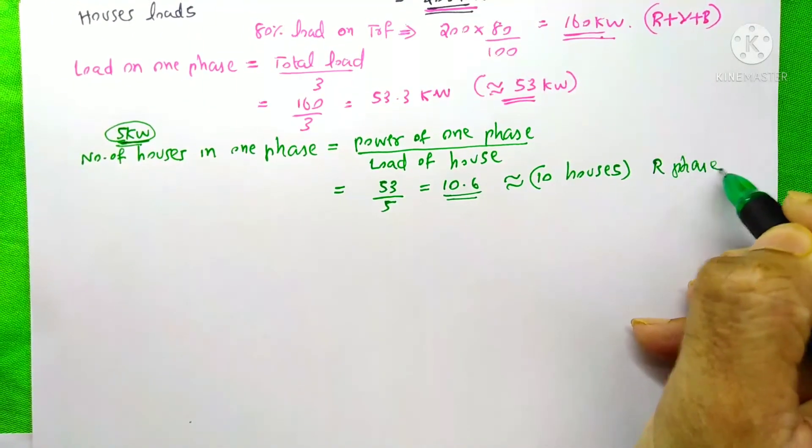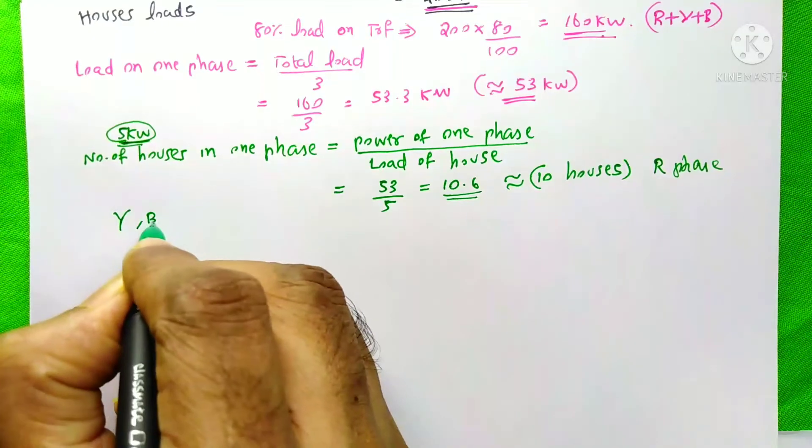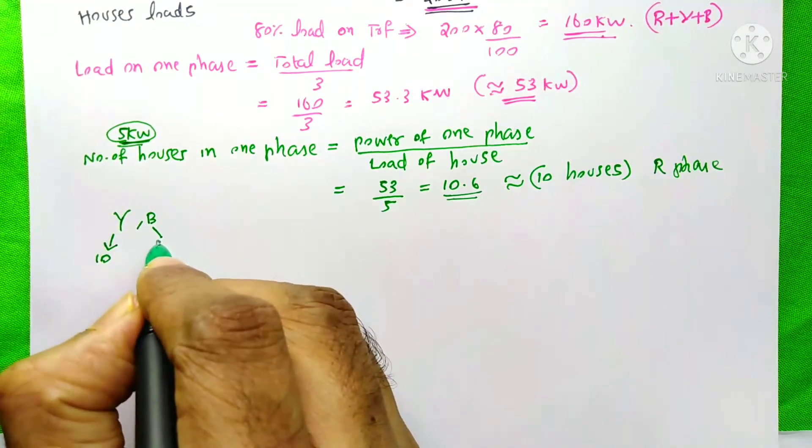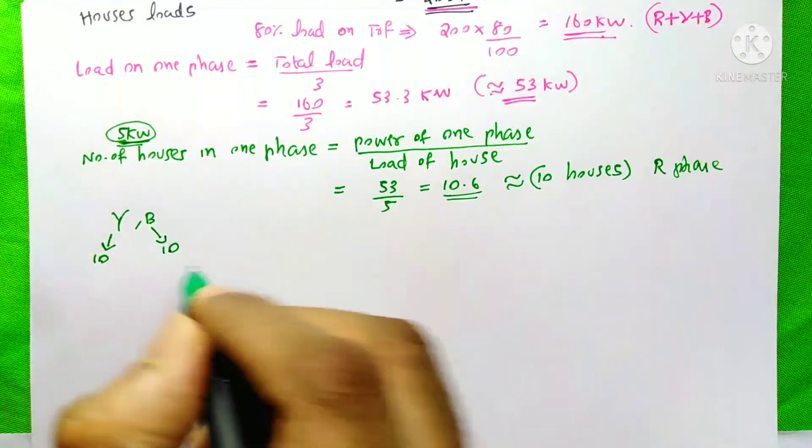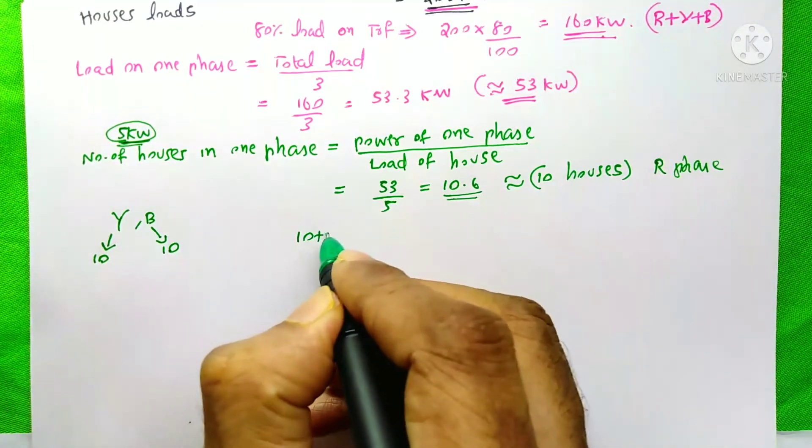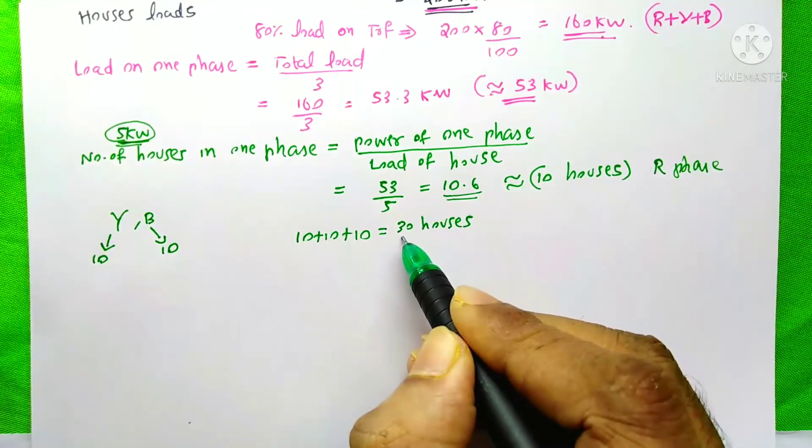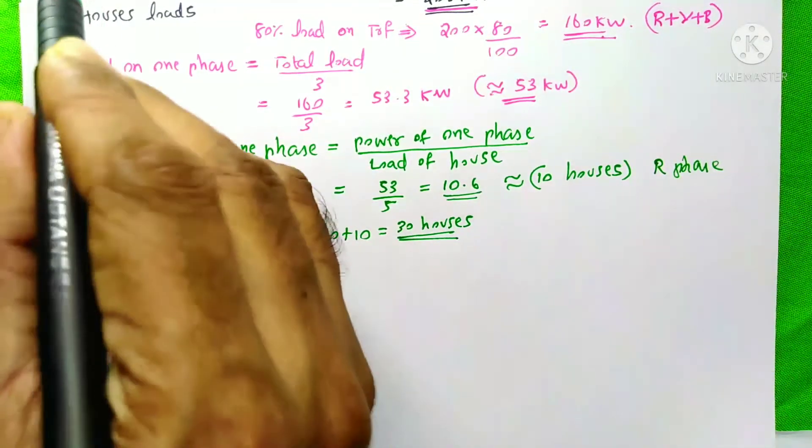Likewise, there is Y phase and B phase also. On the Y phase we can connect 10 houses, and on B phase we can connect 10 houses. So the total is 10 plus 10 plus 10, which equals 30 houses. We could connect 30 houses to this 250 kVA transformer.